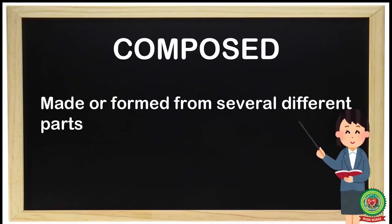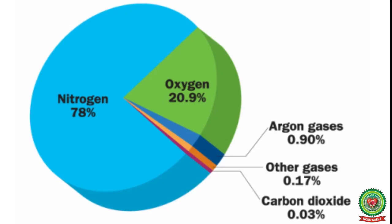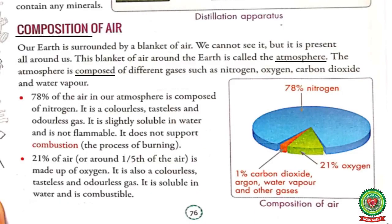Now underline the word 'composed' and write its meaning: made or formed from several different parts. So students, the atmosphere is made from several different gases like nitrogen, oxygen, carbon dioxide, argon, helium and water vapor etc. The main three gases in the air are nitrogen, oxygen and carbon dioxide. Now let's read about these gases and the composition of air.